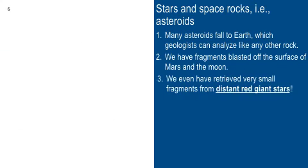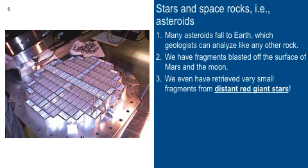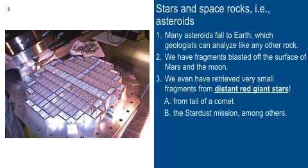Here's another one. Forget about Mars and the moon. We've even got very small fragments from distant red giant stars, like Betelgeuse in the constellation Orion, if you know that one. And the way that we've done that is we sent a spacecraft out to the tail of a comet and we used a device like this on the left. It's about the size of a tennis racket. Well, kind of a big tennis racket. You can see somebody's hand over there to the left. That's the Stardust mission.